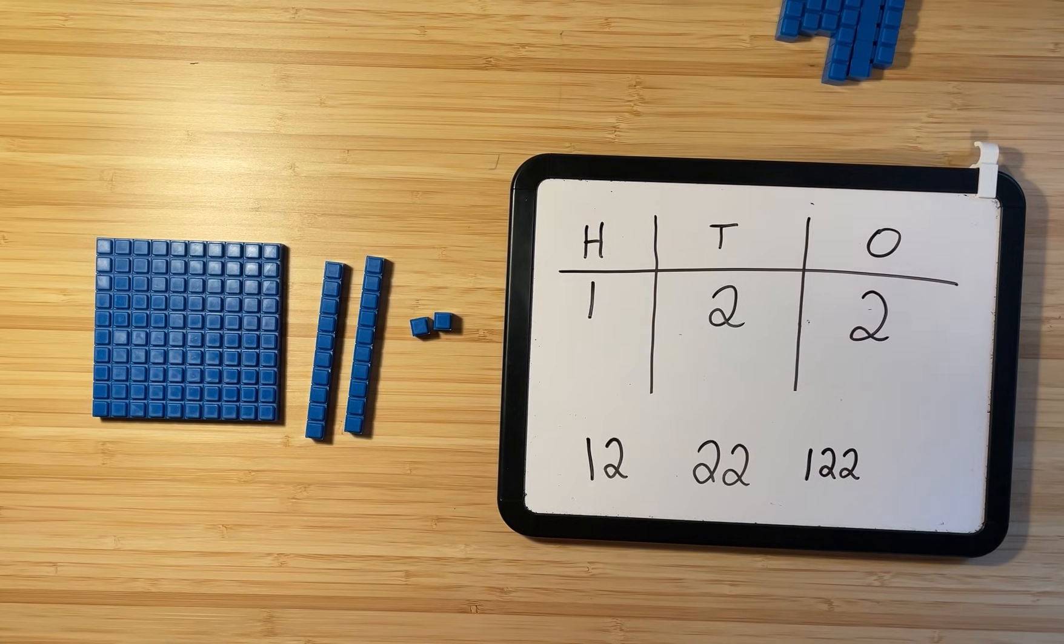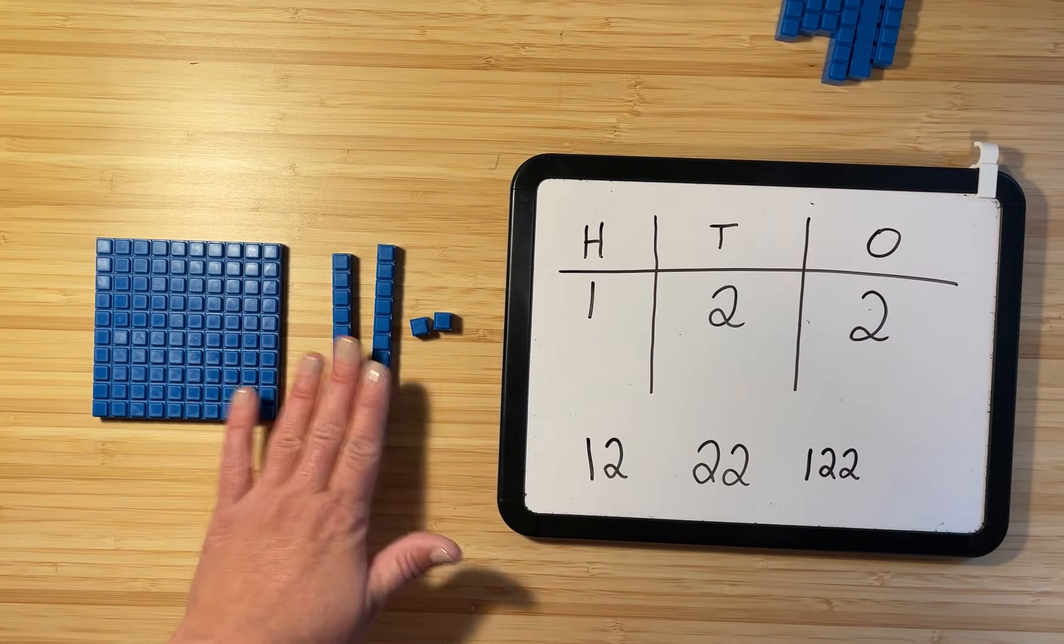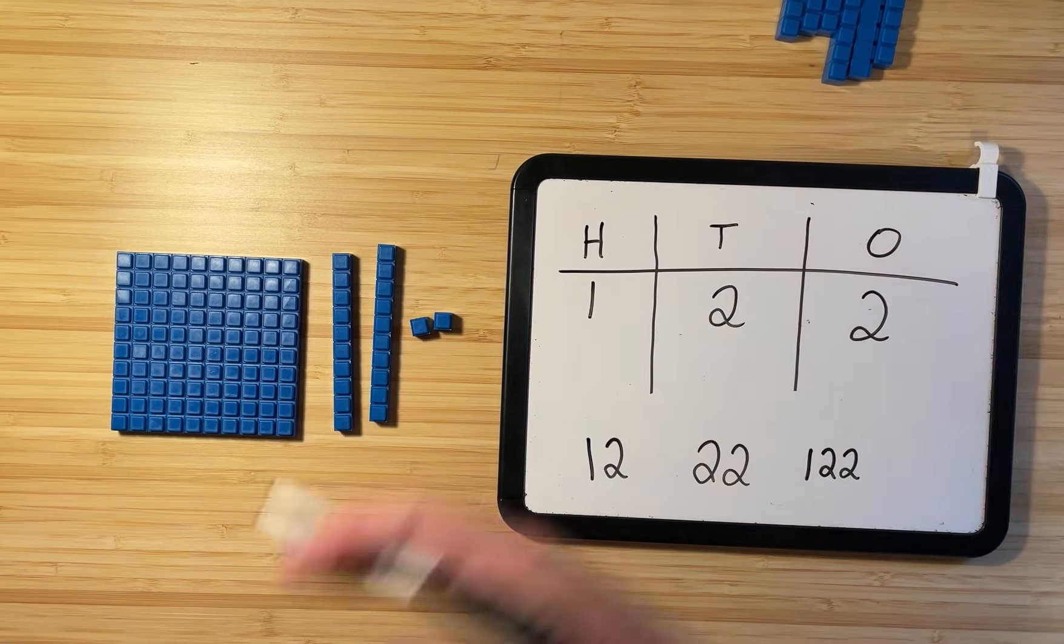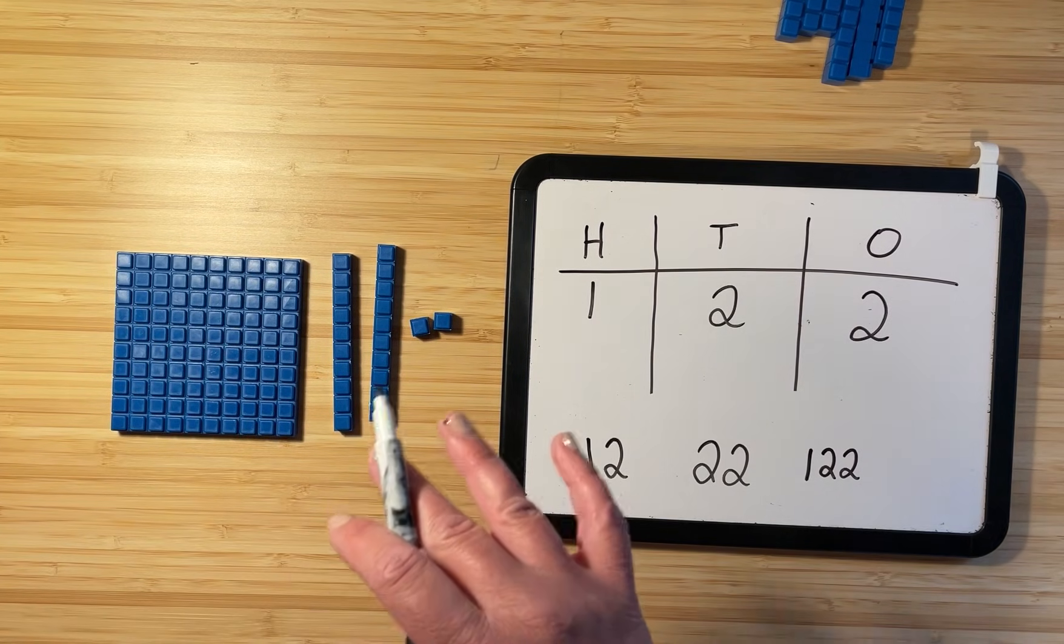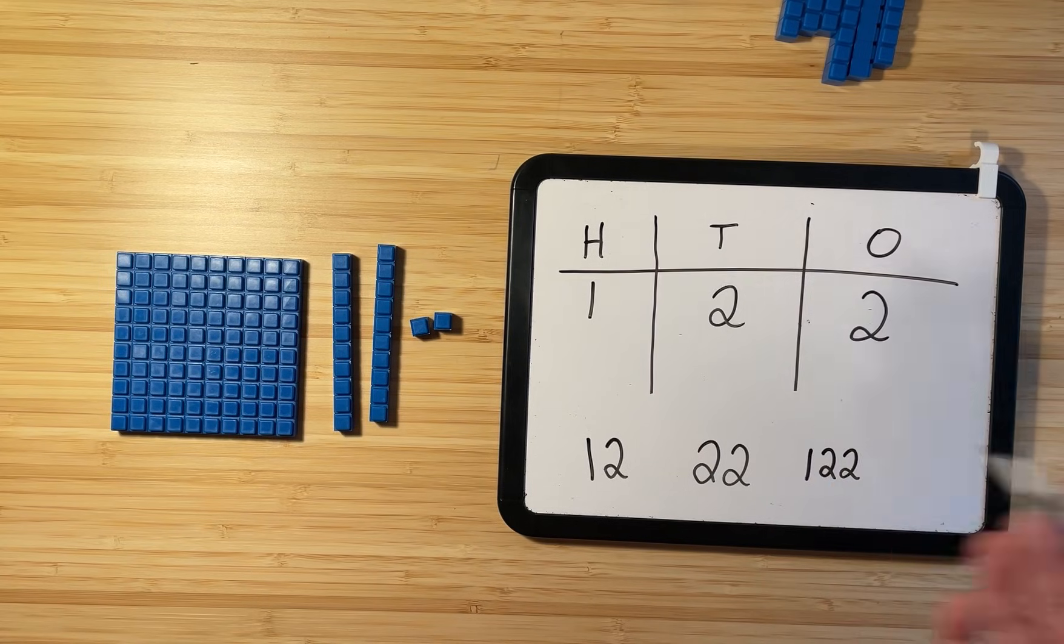I want you to take a second. You can pause this video for a minute. I want you to add something else to your number, something else to your base tens, and then make that adjustment on the place value chart. Then come back and press play as soon as you're done.